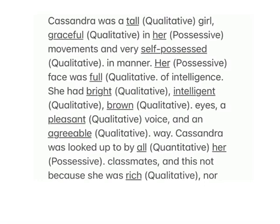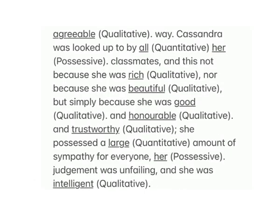She was very self-possessed — qualitative — in manner. Her — possessive — face was full — qualitative — of intelligence. She had bright — qualitative — intelligent — qualitative — brown — qualitative — eyes, a pleasant — qualitative — voice, and an agreeable — qualitative — way. Cassandra was looked up to by all — quantitative — her — possessive — classmates, not because she was rich — qualitative — or beautiful — qualitative — but because she was good — qualitative — and honorable — qualitative — and trustworthy — qualitative. She possessed a large — quantitative — amount of sympathy for everyone. Her — possessive — judgment was unfailing and she was intelligent — qualitative.